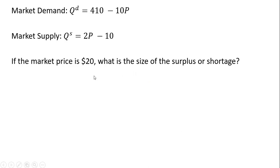So we're going to take this $20 and we're going to plug that into both the market demand and market supply. So taking our market demand, where we have P, I'm plugging in 20, and then we're just going to do the math here. We're going to get 410 minus 10 times 20, or 410 minus 200. So we have a quantity demanded of 210 units.